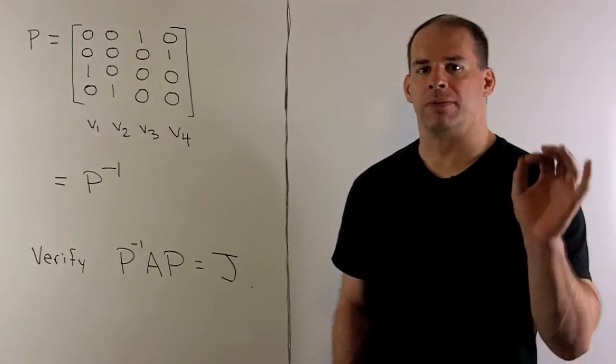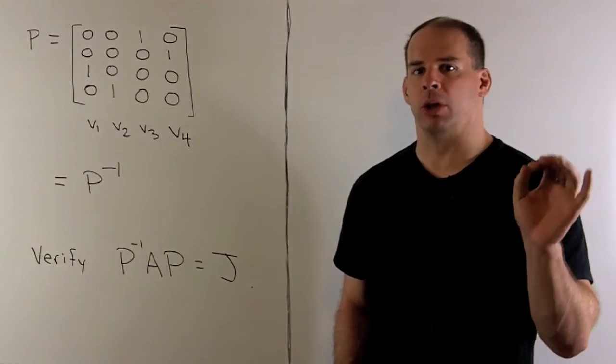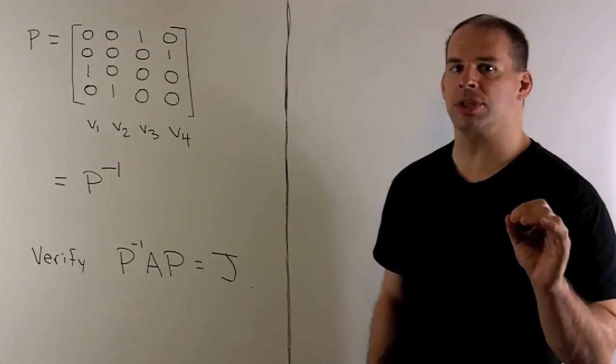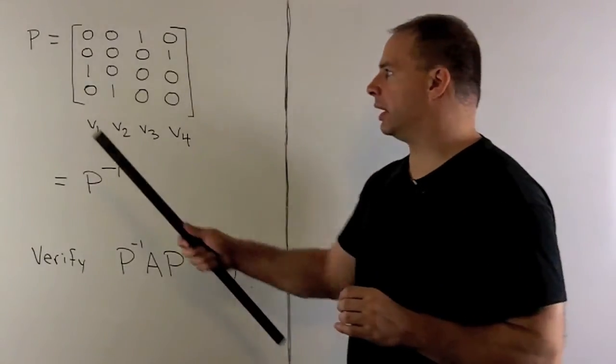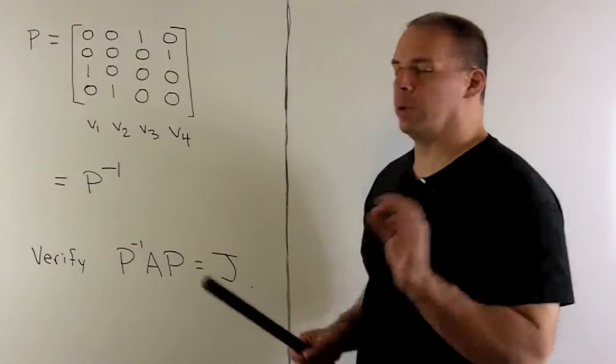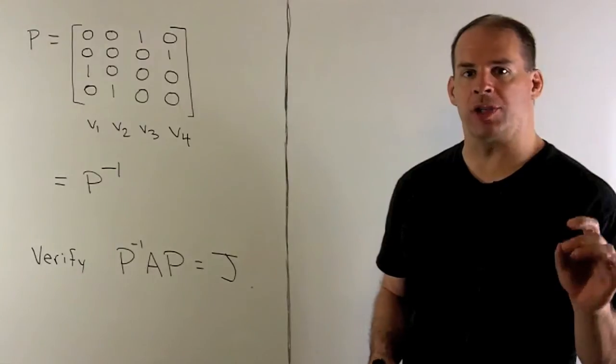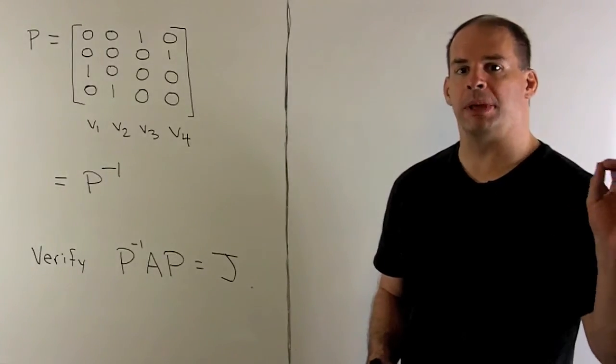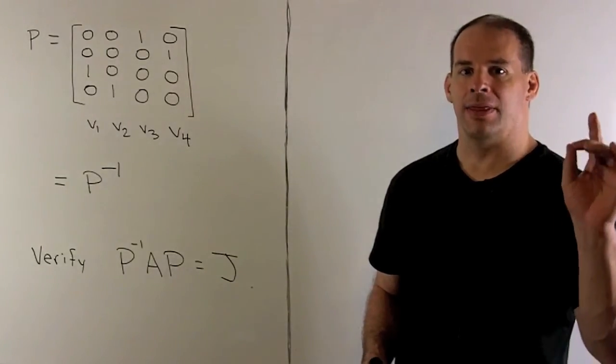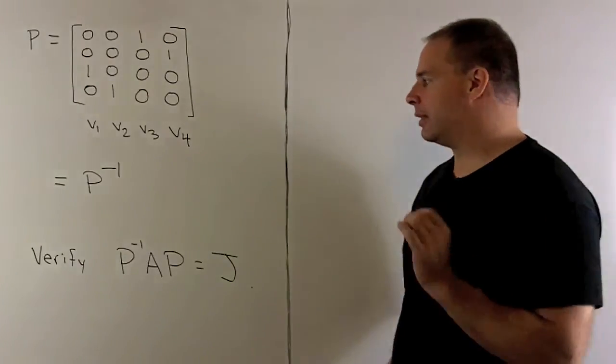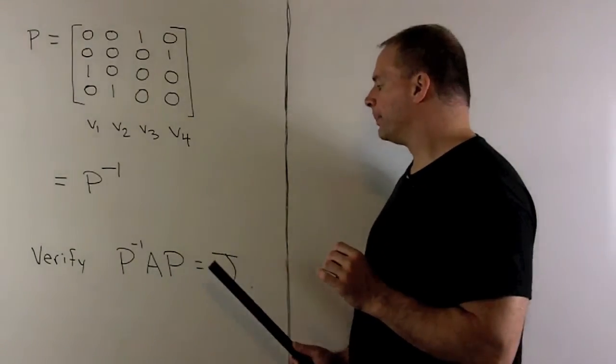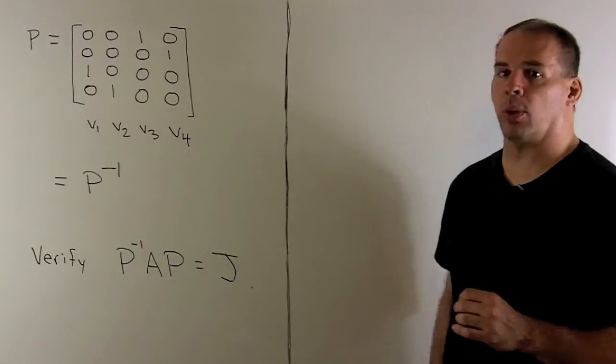With our basis, we can form the basis matrix P by loading the V's in as the columns. We get this matrix for P. We note, P times P transpose is the identity, so P is equal to P inverse. And I'll leave it to you to verify that P inverse AP is equal to our Jordan form.